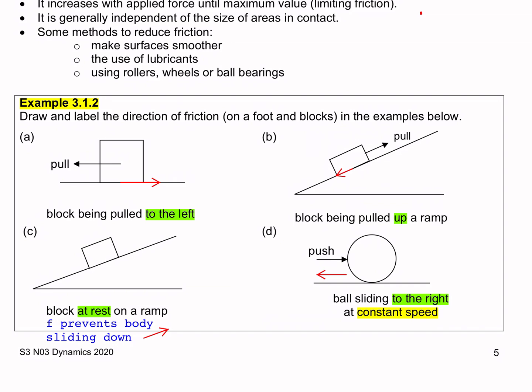If the block is already moving and the friction is less than the pull, there will be a net force upwards and the block will accelerate up the slope.